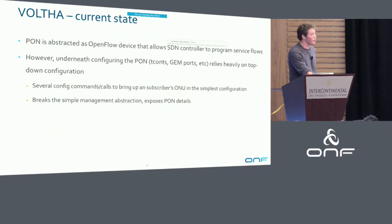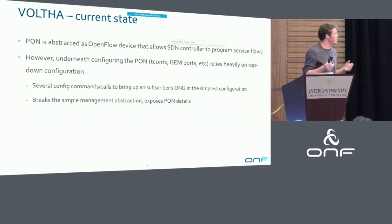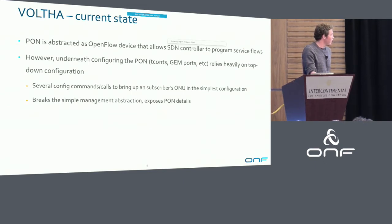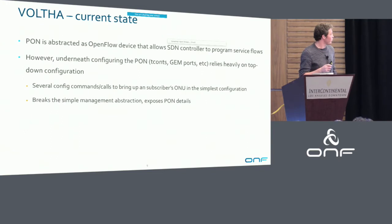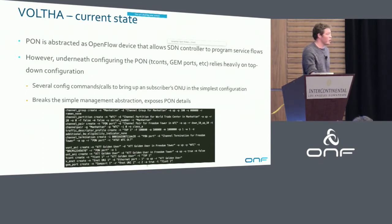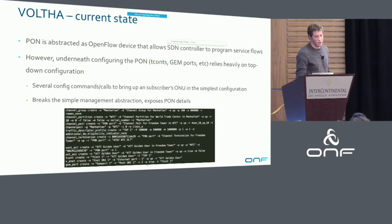Looking further out: currently VOLTHA abstracts the entire PON as an OpenFlow device, allowing an SDN controller to program flows. However, actually passing data traffic across the PON requires a lot of configuration of PON-specific constructs — things like TCONTs, GEM ports, and more. Right now, much of this relies on configuration coming from the north. There is a set of 11 different CLI commands needed to bring up a PON in a very simple configuration — more for complex configurations. This is very cumbersome for operators and doesn't fit well with the simple management abstraction we want, because we're exposing PON-specific details north of VOLTHA rather than hiding them inside it.